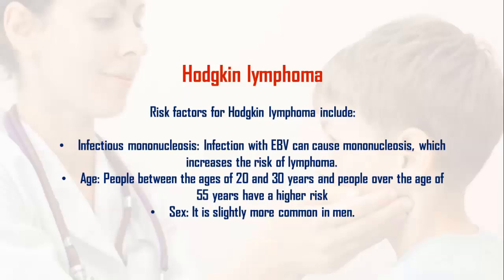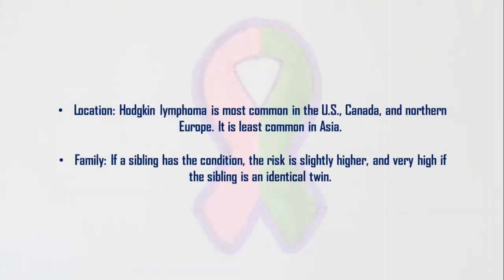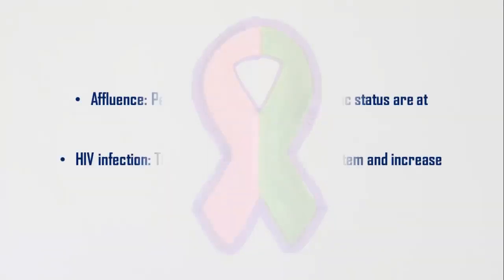3. Sex: it is slightly more common in men. 4. Location: Hodgkin lymphoma is most common in the U.S., Canada, and northern Europe; it is least common in Asia. 5. Family: if a sibling has the condition, the risk is slightly higher, and very high if the sibling is an identical twin.